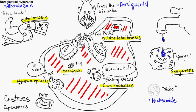Hymenolepiasis comes from the dwarf and the rat tapeworm. Adult tapeworms are confined to the intestine. Treat with praziquantel — same treatment as taeniasis.